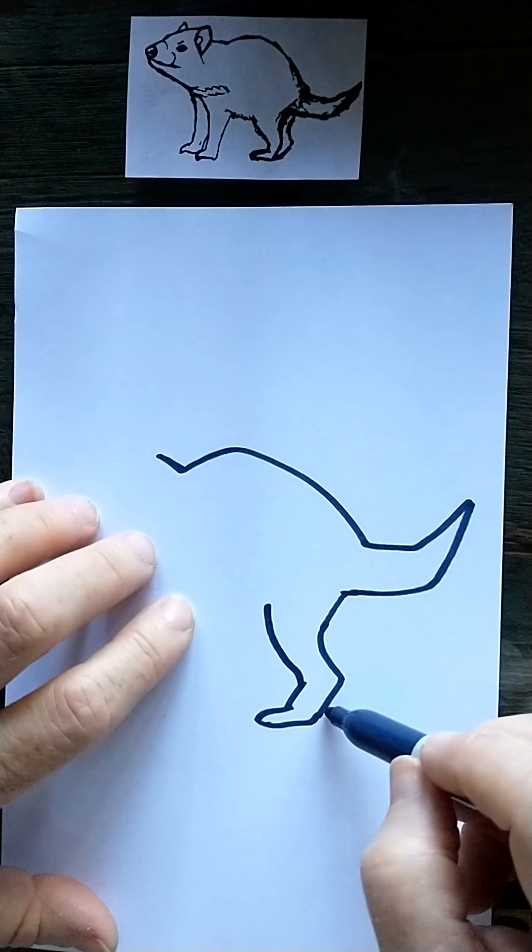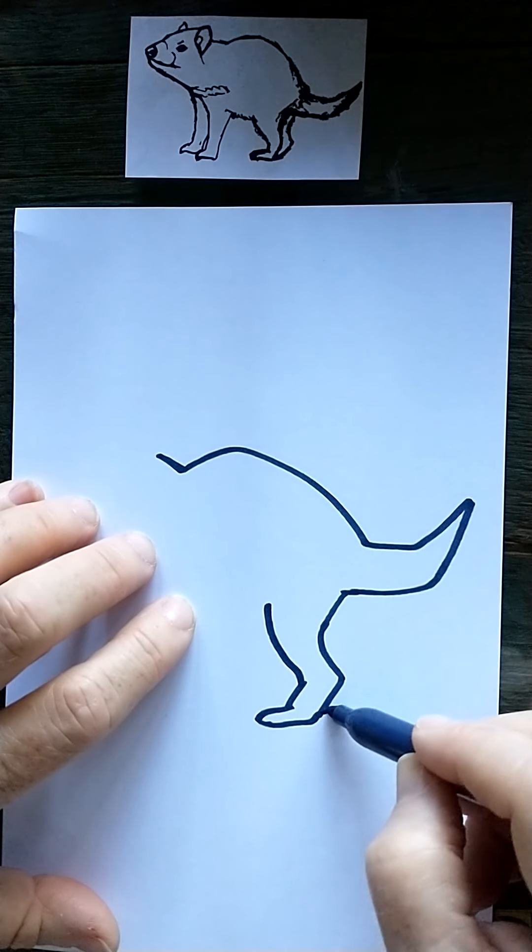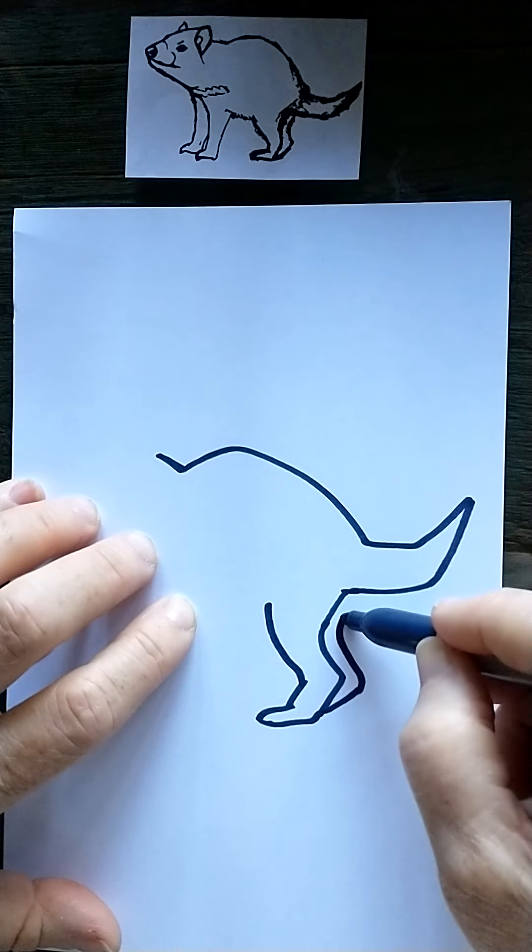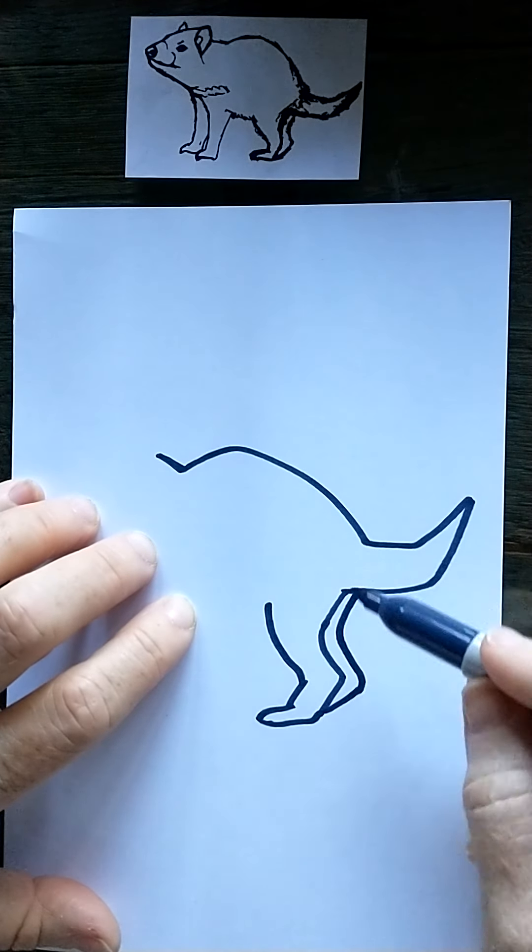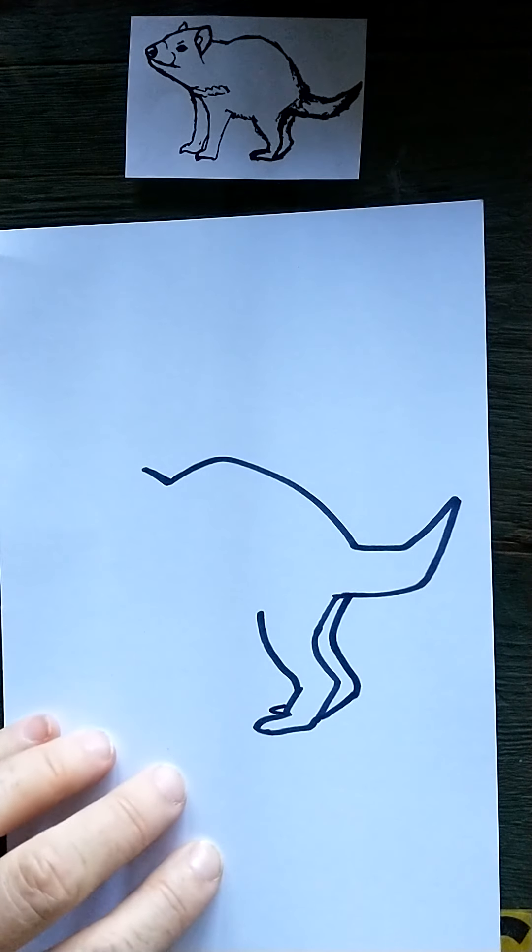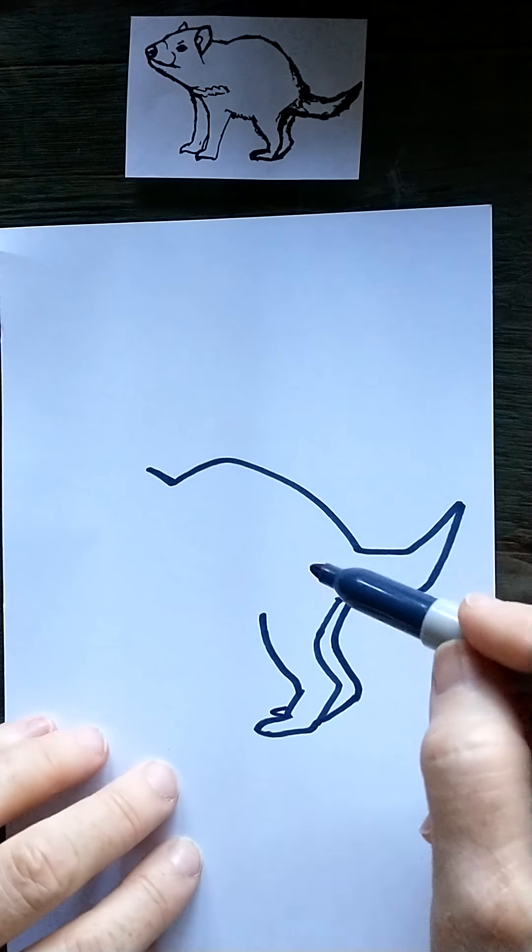And then there's the other leg on the other side. I can see kind of making that same, almost that same shape, right? That's the leg on the other side. Maybe I even put the toe sticking out a bit.